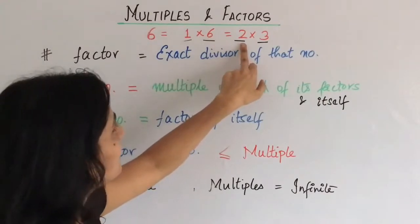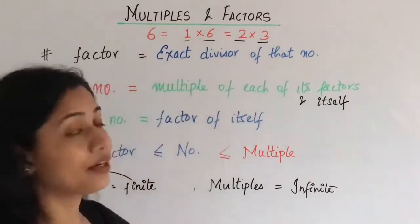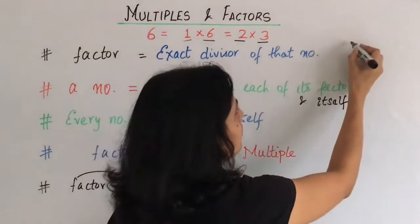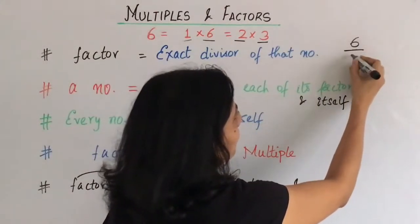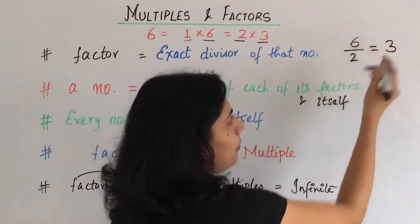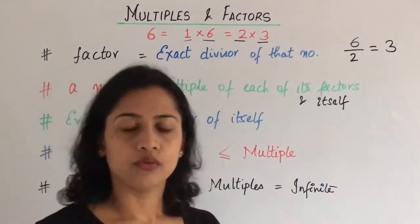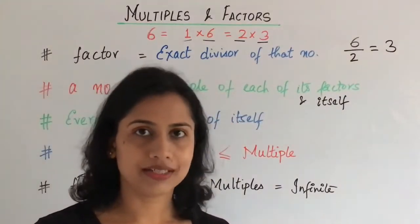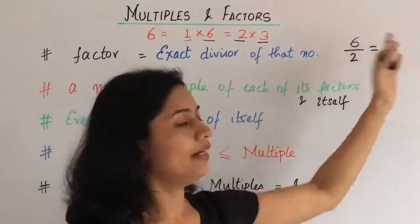Then, 2 is an exact divisor of that number. That means, ki 2, 6 ko exactly, completely divide kar raha hai. Because, completely divide karne ka kya matlab hai? There is no remainder. It's going to divide it completely.